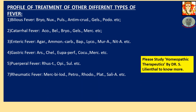Profile of treatment of other different types of fever. There are some other types of fever according to the homeopathic system of medicine. Those are being described now. 1. Bilious Fever — the term 'bilious' comes from bile, which is the secretion of the liver. Remedies: Bryonia, Pulsatilla, Antimonium Crudum, Gelsemium.